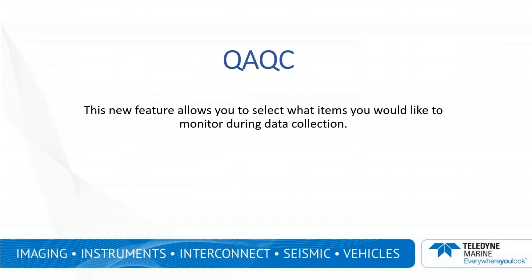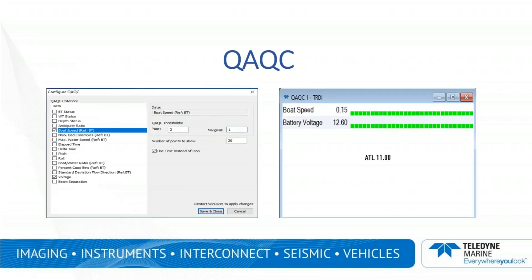QA/QC. This new feature allows you to select what items you would like to monitor during data collection or playback. In this example, I have selected boat speed and voltage as examples. In the case of the boat speed, you can see that I set the pool value to 2 meters per second and the marginal value to 1 meter per second. In the checkbox just below, you can check to use either text or an icon.